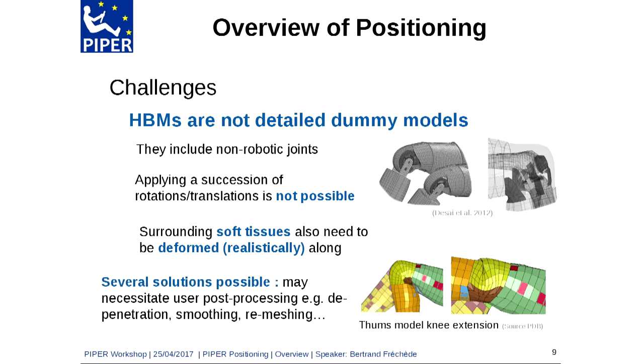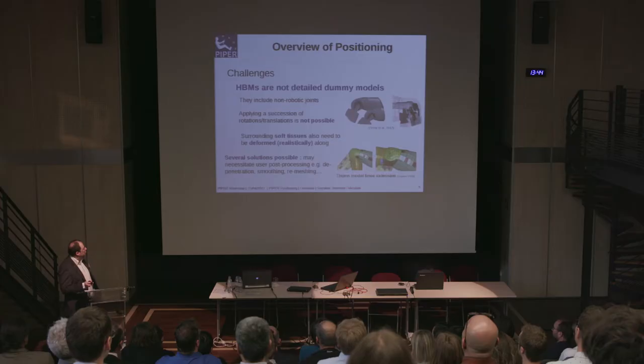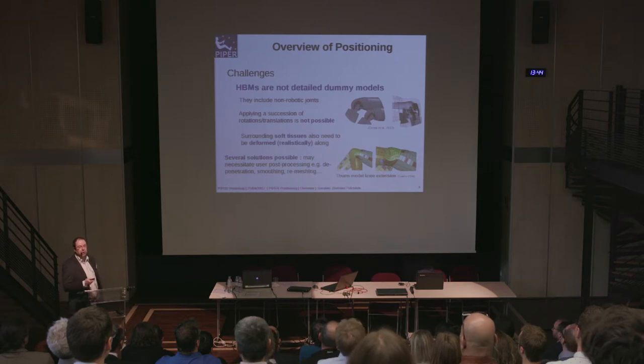There are several possible solutions. FE simulation is one option, with alternatives such as differentiating between rigid body motion for bones and handling soft tissues separately. However, these generally require post-processing such as penetration smoothing and remeshing to control element quality.